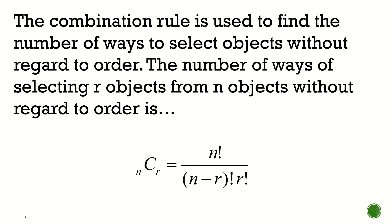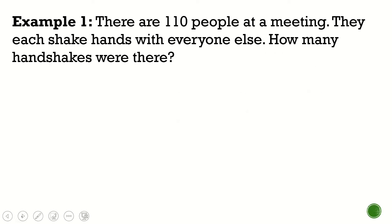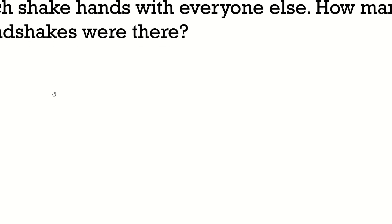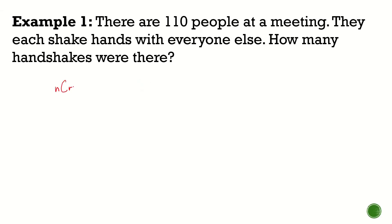Now, to solve problems involving combination, we will be using this formula: n factorial all over (n minus r) factorial times r factorial. Let's go to the first example. There are 110 people at a meeting and they each shake hands with everyone else. How many handshakes were there? This is a handshake situation — we're doing combination here. If you remember the formula, that's n taken r at a time: n factorial all over (n minus r) factorial times r factorial.